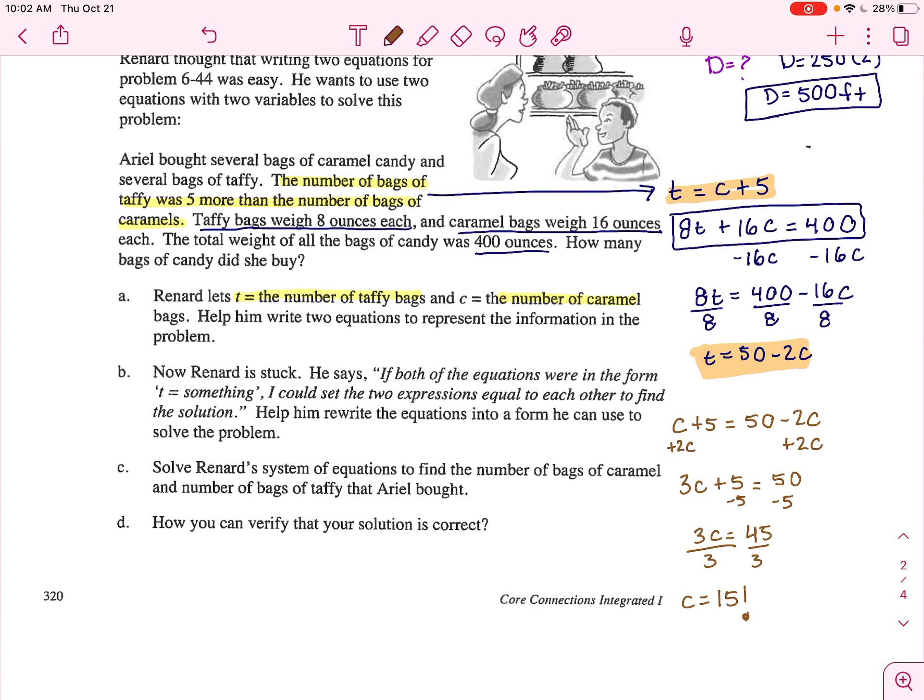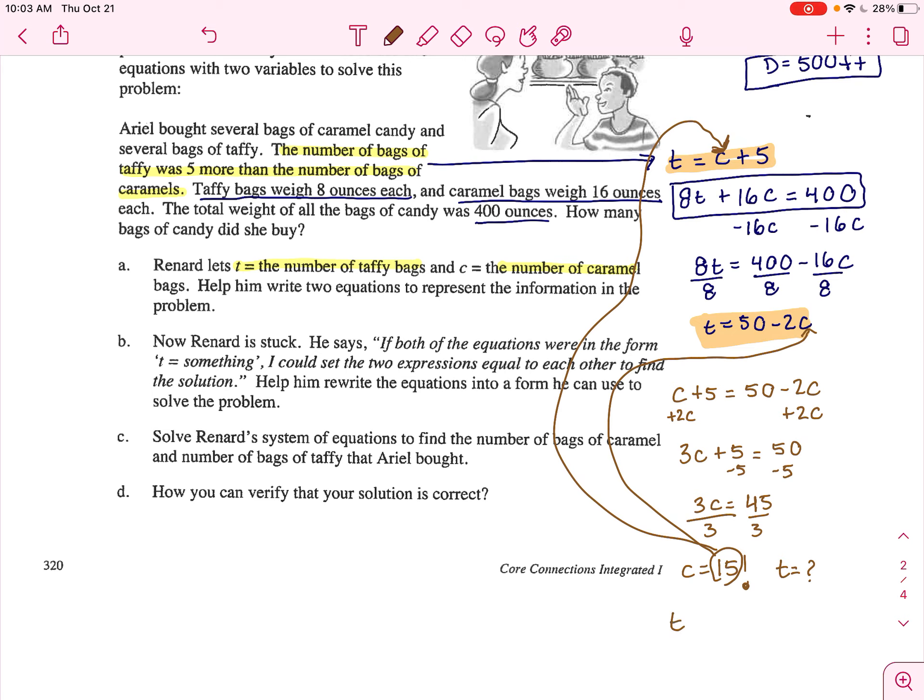Well, how many bags of taffy then did we buy? Well, you can simply plug this C equals 15 into one of our equations. You can plug it in here or you can plug it in up here. I'll do the top equation. So T equals C is 15 plus five. So T equals 20.